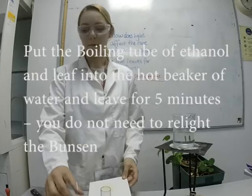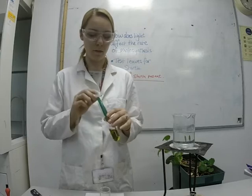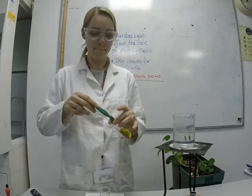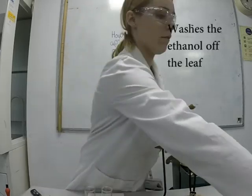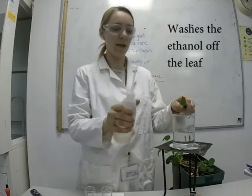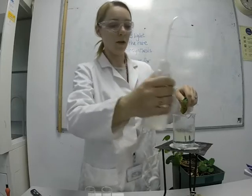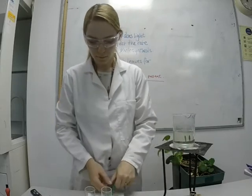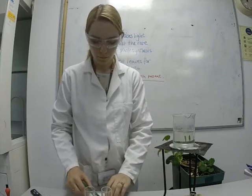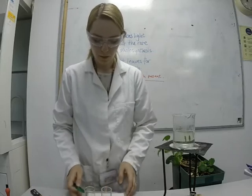Swirl the leaf around in the ethanol and leave it there for five minutes. After five minutes, take your leaf out of the ethanol and rinse it in some distilled water to remove the extra ethanol. This should soften the leaf up as well. Then lay your leaf flat onto a white tile.